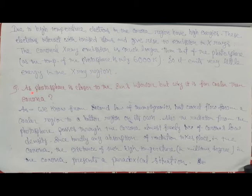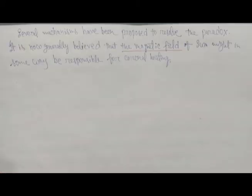As the photosphere is closer to the Sun's interior, why is it far cooler than the corona? We know from the second law of thermodynamics that heat cannot flow from a cooler region to a hotter region on its own. Also, radiation from the photosphere passes through the corona almost freely because of corona's low density. The existence of such a high temperature, which varies in the order of billions of degrees in the corona, represents a paradoxical situation. Several mechanisms have been proposed, and it is now generally believed that the Sun's strong magnetic field might be somehow responsible for this coronal heating.